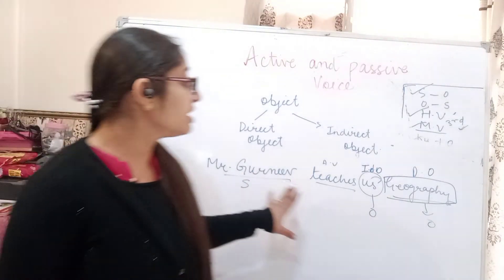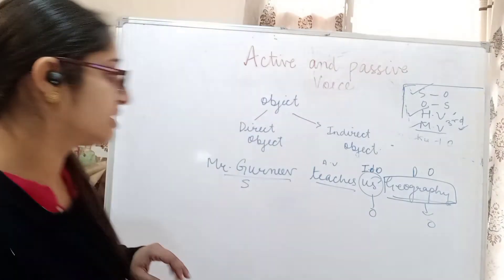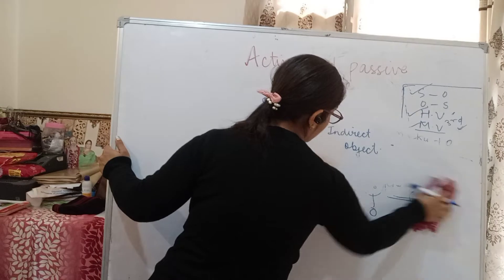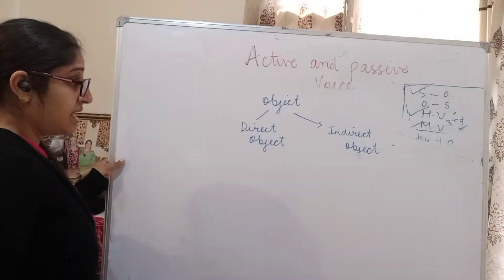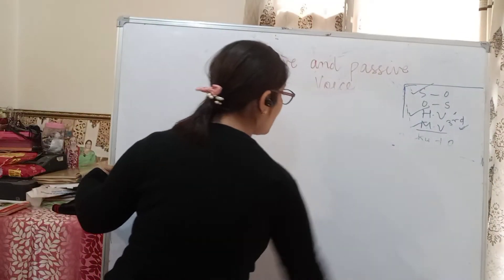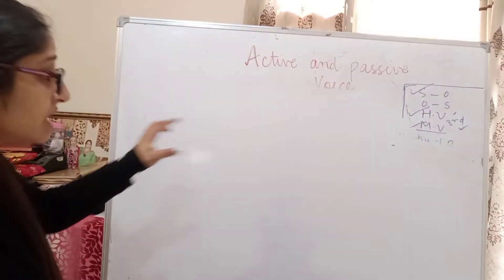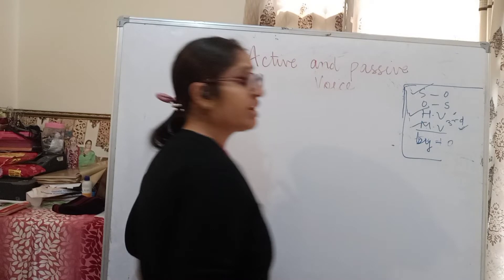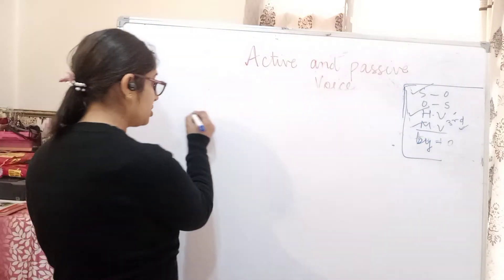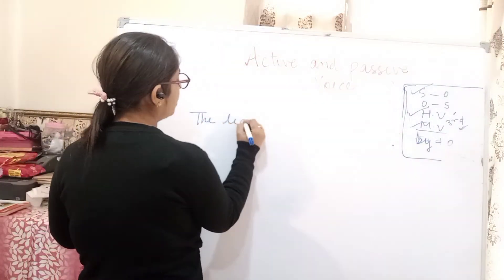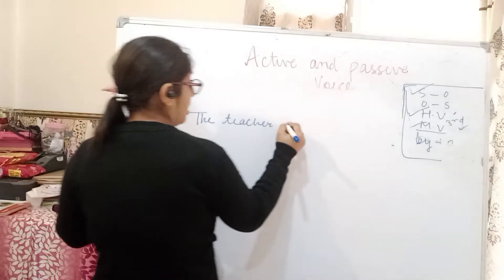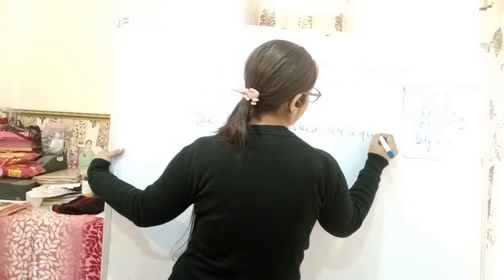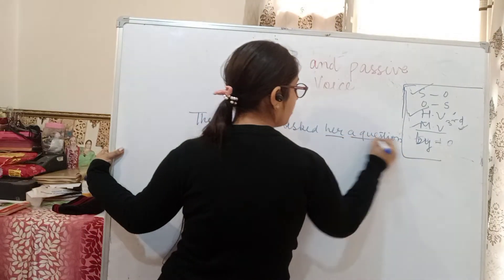Now, if in a sentence you have two objects, how will you change it into passive voice? You have to follow the same four rules: subject to object, object to subject, helping verb, main verb in third form, and 'by' as a preposition. Take the sentence: 'The teacher asked her a question.' We know there are two objects in our sentence, so you can change both objects.